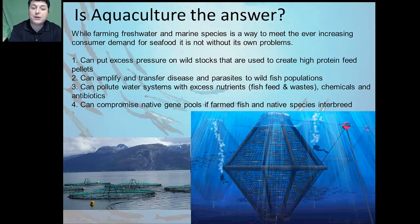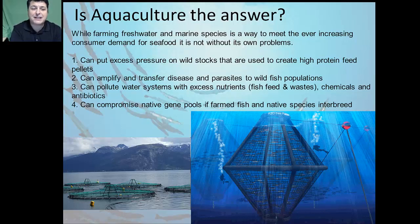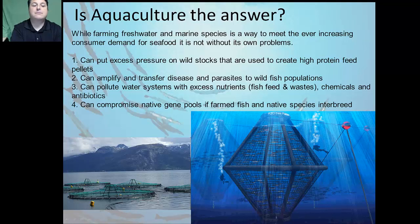However, fish farms can also have negative impacts on the environment and wild fish populations. They could put excess pressure on wild fish stocks, as those could be used to create high-protein feed pellets. In fact, some farmed fish require four times the input of biomass to produce those farmed fish. Aquaculture can also amplify and transfer diseases and parasites to wild fish populations, because the populations are grown in such high density that density-dependent diseases are at higher incidence and could be passed easily to wild fish nearby.